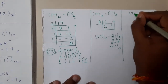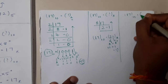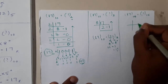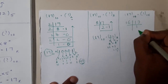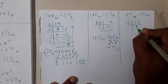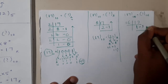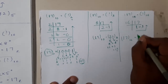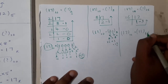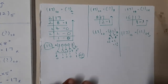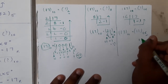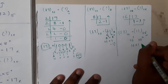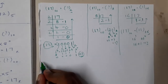Now for base 16: 17 base 10 equals what in base 16? Divide 17 by 16: quotient is 1 and remainder is 1. So 17 base 10 = 11 base 16. To confirm: 1×16¹ + 1×16⁰ = 16 + 1 = 17. Correct!